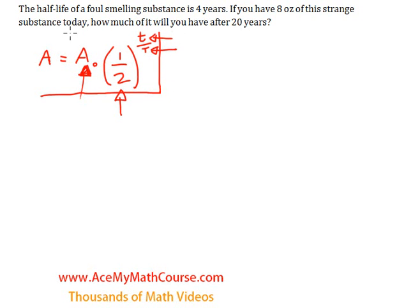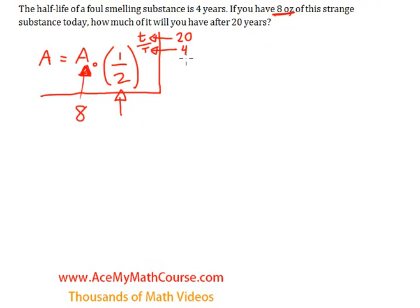In this case, we have a foul-smelling substance, and the half-life is 4 years. We have 8 ounces of it. So, how much will you have after 20 years? Little t is 20, big T is 4. Try never to mix up little t and big T. Big T in the half-life formula is the half-life itself; little t is time.